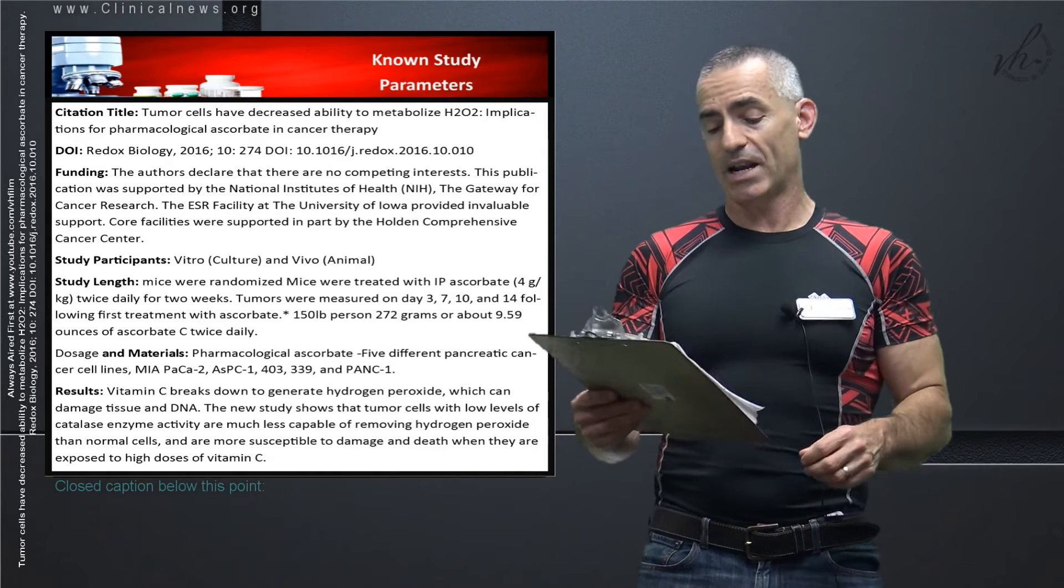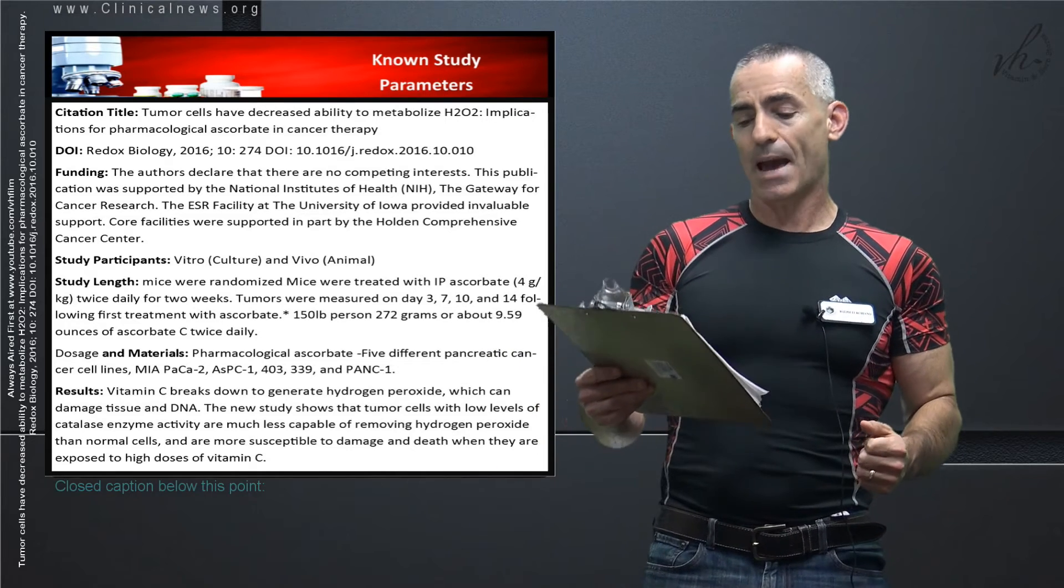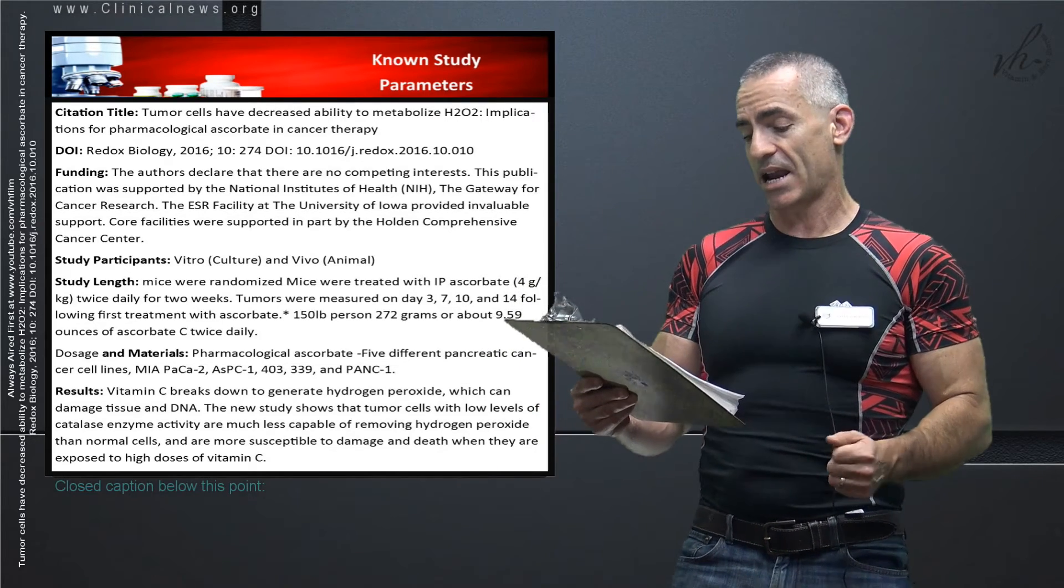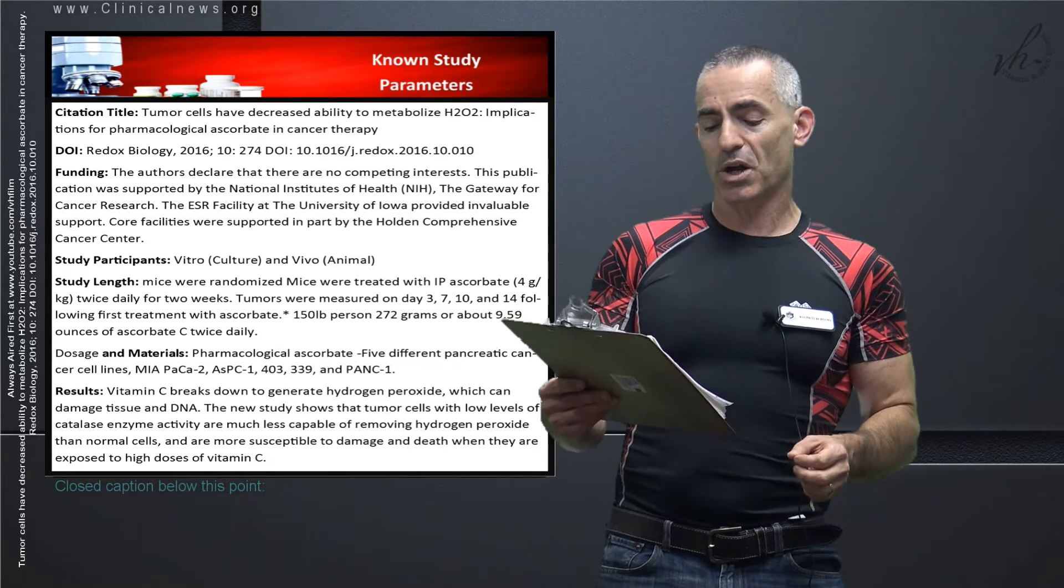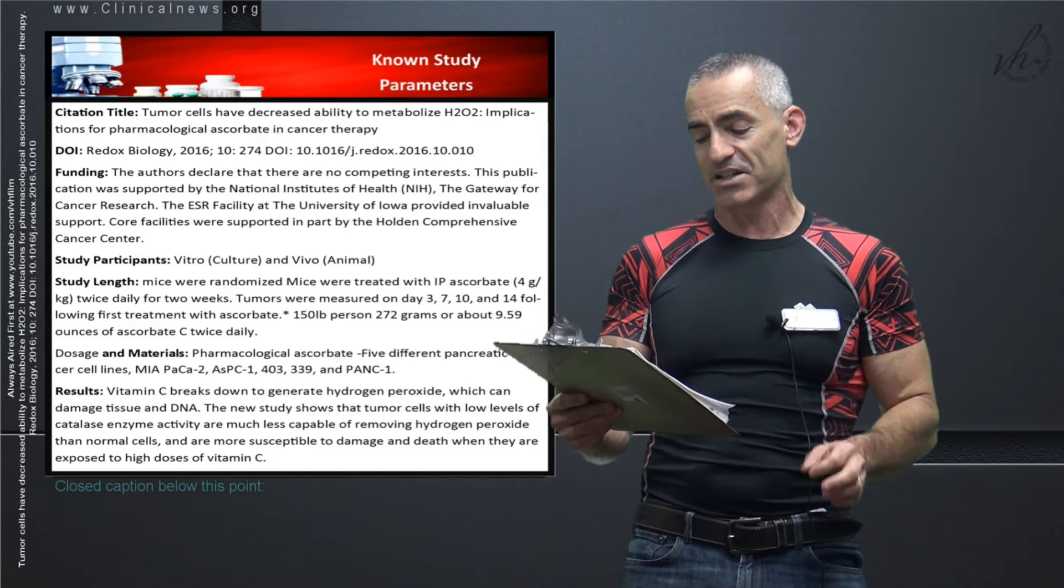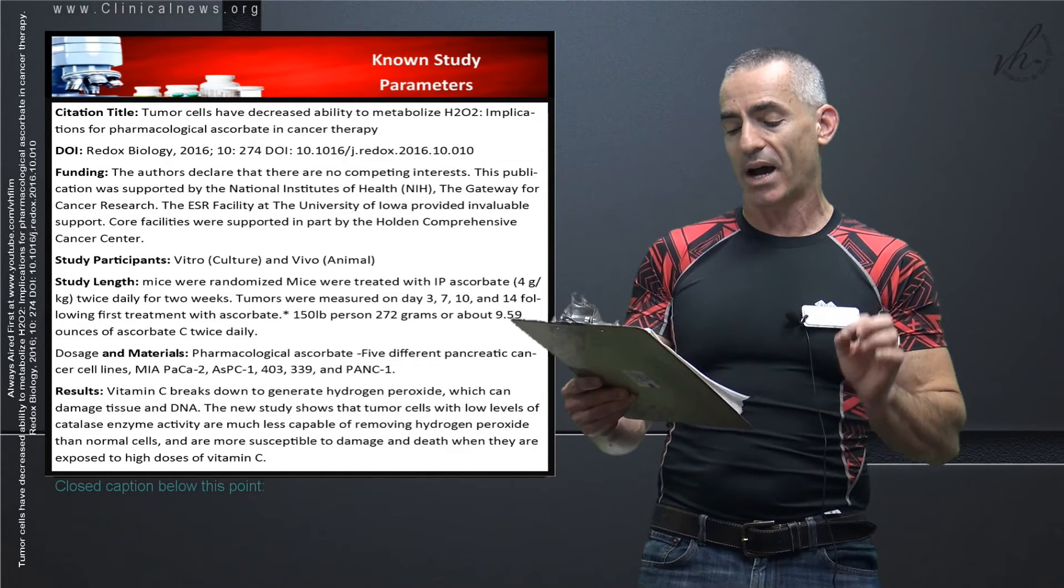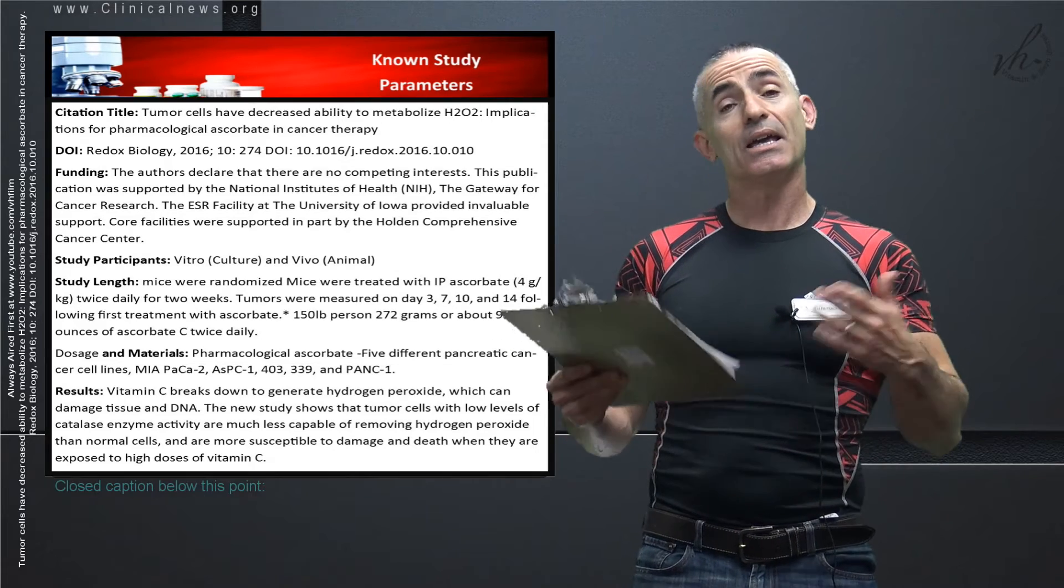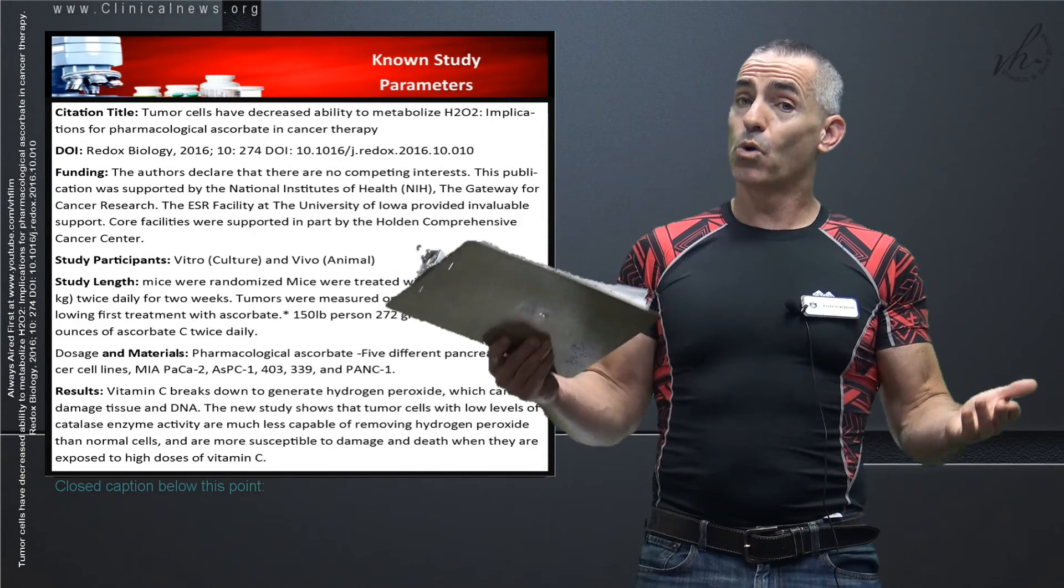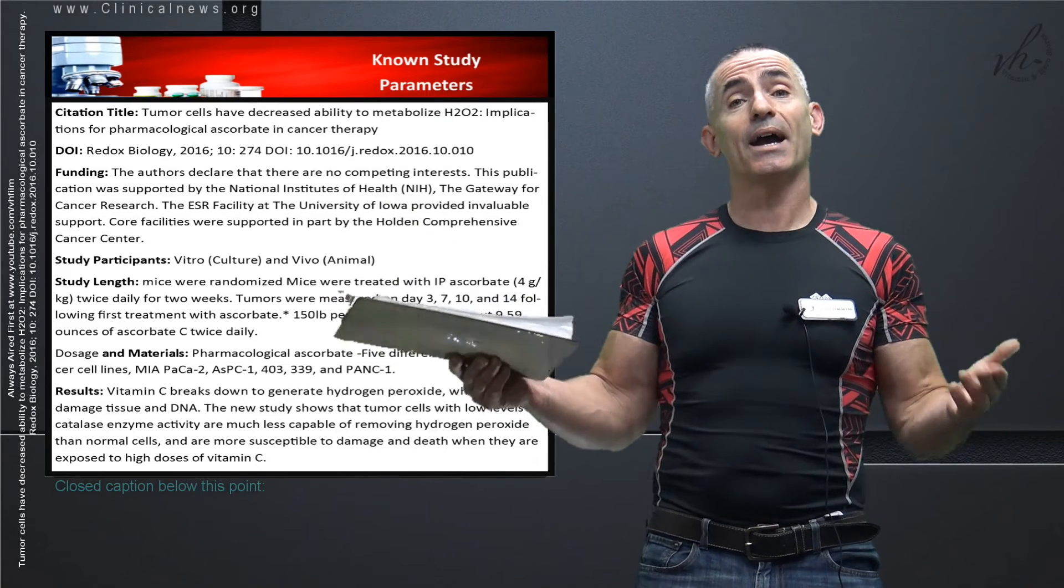Results were as follows. Vitamin C breaks down to generate hydrogen peroxide which can damage tissue and DNA. The new study shows that tumor cells with low levels of catalase enzyme activity are much less capable of removing hydrogen peroxide than normal cells and are much more susceptible to damage and death when they are exposed to high levels of vitamin C yet leave your normal cells, which can handle catalase or produce catalase just fine, intact, undamaged.